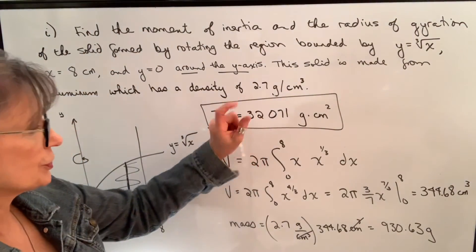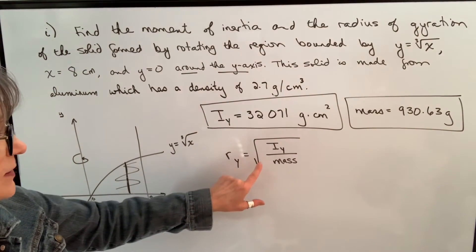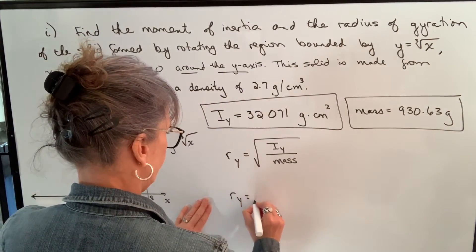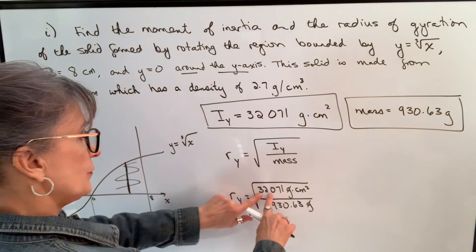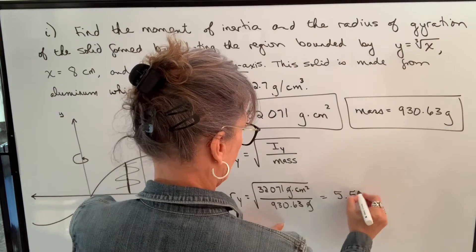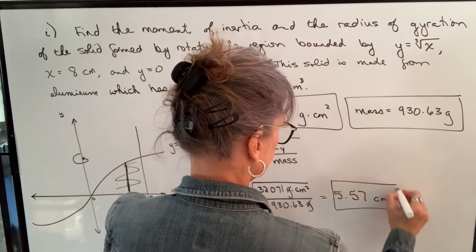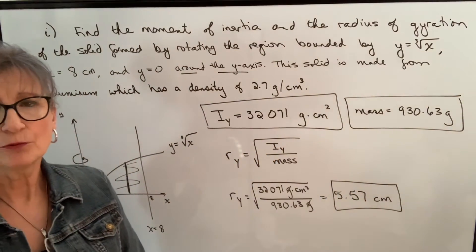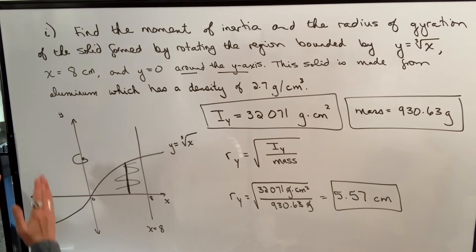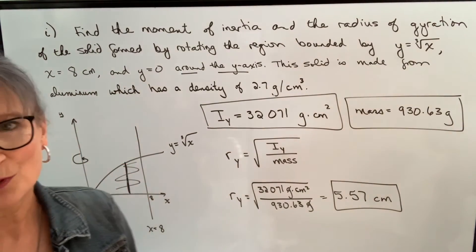Now that we have moment of inertia and mass, we can find the radius of gyration. We know that the radius of gyration with respect to the y-axis is the square root of the moment of inertia with respect to the y-axis divided by the mass. So we plug those values in — the grams will cancel — and we take the square root of 32,071 divided by 930.63. The square root of square centimeters gives us centimeters. What that means is that if we took a mass of 930.63 grams and placed it at x equals 5.57 or x equals negative 5.57, it would have the same rotational inertia as this volume with respect to the y-axis.